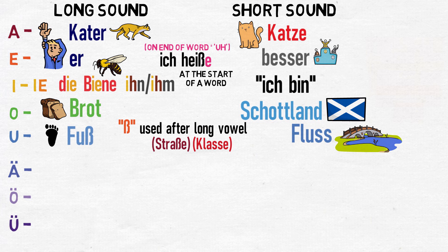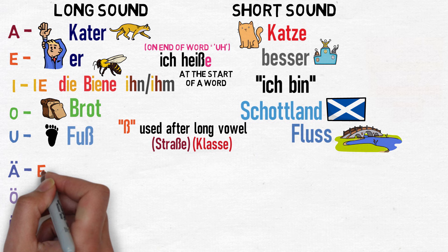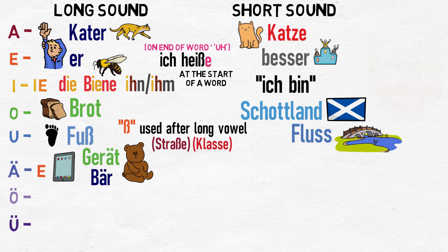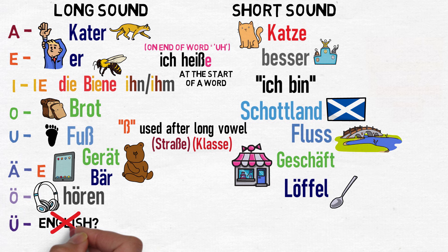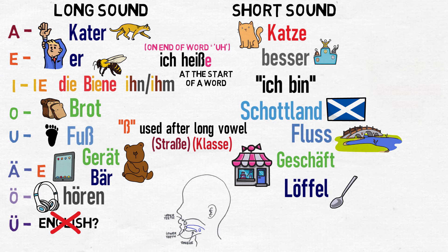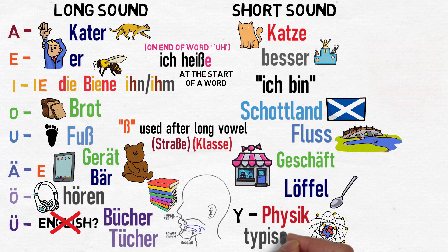A-umlaut (Ä) should be treated like the letter E, with a long sound as in Gerät or Bär, and a short sound as in Geschäft. O-umlaut (Ö) has a long sound like hören or a short sound like Löffel. Ü doesn't have an English equivalent, but differs from U by where the tongue is in the mouth — like in Bücher and Tücher rather than Buch or Tuch. Finally, Y makes a rare Ü sound like in Physik or typisch, but a Y sound if starting or ending a word, like Hobby or Yoga.